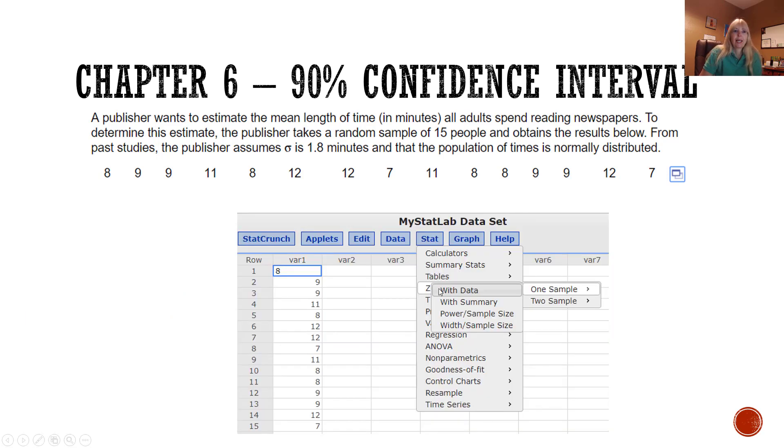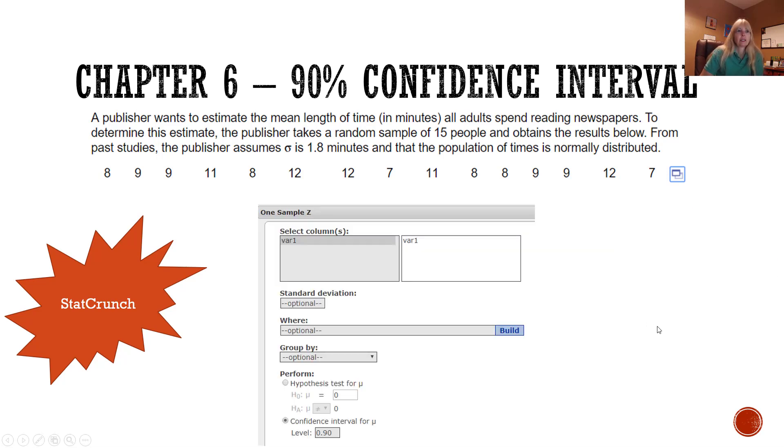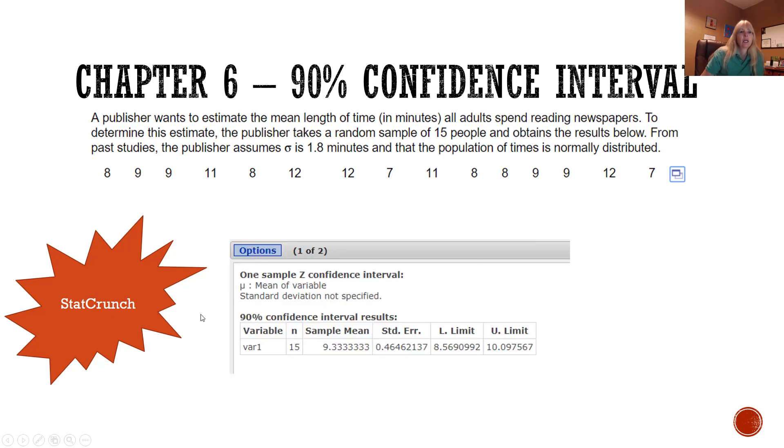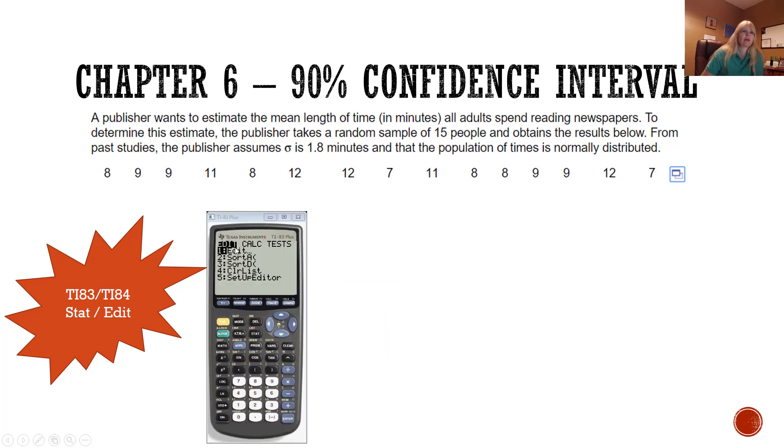If you wanted to use StatCrunch, you would open the data and then you click stat, Z one sample with data, because you're actually given data here. Pretty much everything you're going to do is going to be under stat - you just have to know is it a Z or a T. Then click on var 1 so it moves it over there, and be sure and change your confidence interval to 90% about the mean. You'll see by your output you get the same answer.